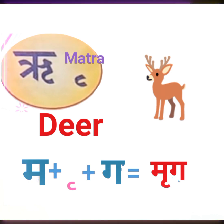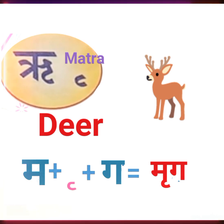Next, if we add re-matra to the word ma, it becomes mrh. Add ga — mrg. Mrg means deer.